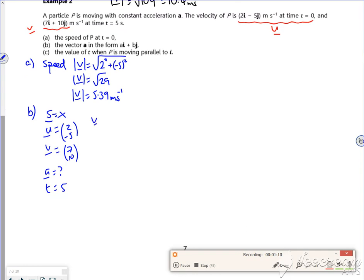So if I use v equals u plus at, well, I want my a out. So what have we got? So I've got 7, 10 equals 2, minus 5 plus a times 5.